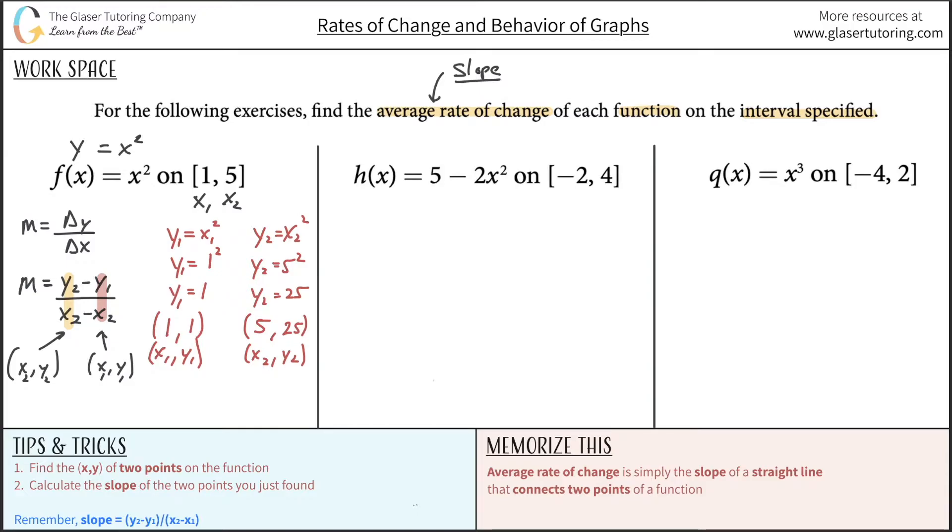Lo and behold, now we have everything we need. Here are the two coordinates. All I have to do is plug them into this equation. So here is now m equals Y2, which we said is 25, minus Y1, which is 1, divided by X2, which is 5, minus X1, which is 1. This works out to be 24 over 4. If we reduce this down, 4 goes into 24 six times. So the slope here, the average rate of change, is going to be 6.